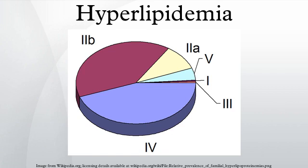Combined hyperlipoproteinemia is the most common inherited lipid disorder, occurring in approximately 1 in 200 persons. Almost 1 in 5 individuals who develop coronary heart disease before age 60 will have this disorder. The elevated triglyceride levels are generally due to an increase in VLDL, a class of lipoprotein prone to cause atherosclerosis. Familial combined hyperlipidemia is probably caused by decreased LDL receptor activity and increased APOB. Acquired combined hyperlipidemia is extremely common in patients with metabolic syndrome, where excessive free fatty acid production leads to increased VLDL synthesis by the liver.